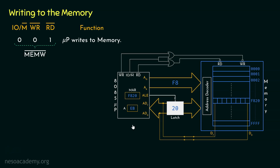Let's begin the process. The memory address register is already pointing to F820, that is the location with which the 8085 microprocessor is going to communicate — this is the location where EB will be stored. The higher order byte as well as the lower order byte of the address have been sent to the address decoder. At this particular time ALE is set to 1, indicating this channel is carrying the lower order byte. So the address decoder has already decoded the address.